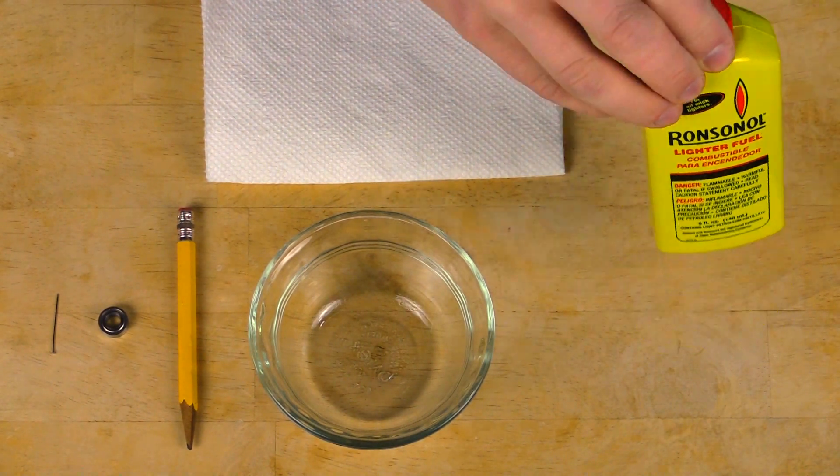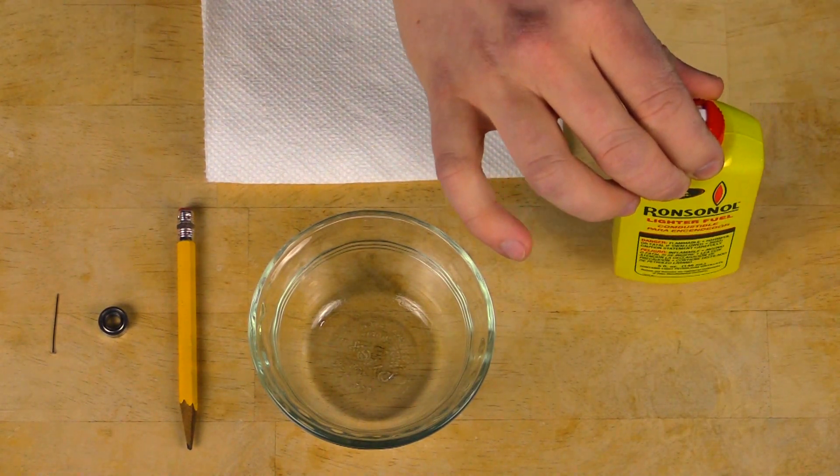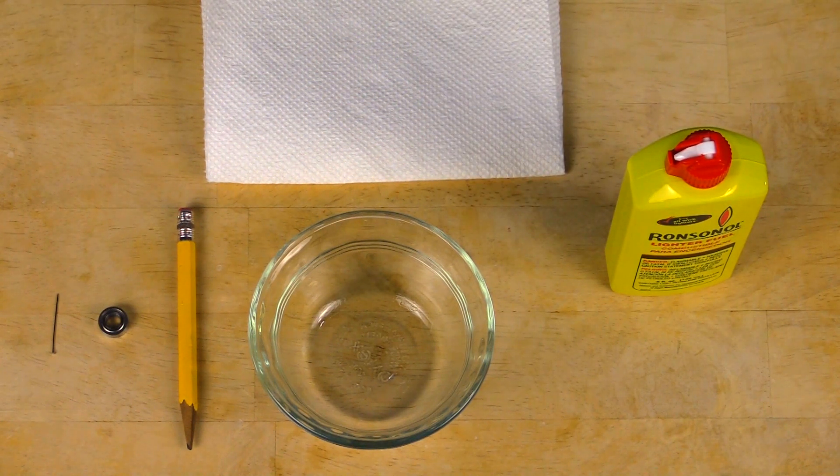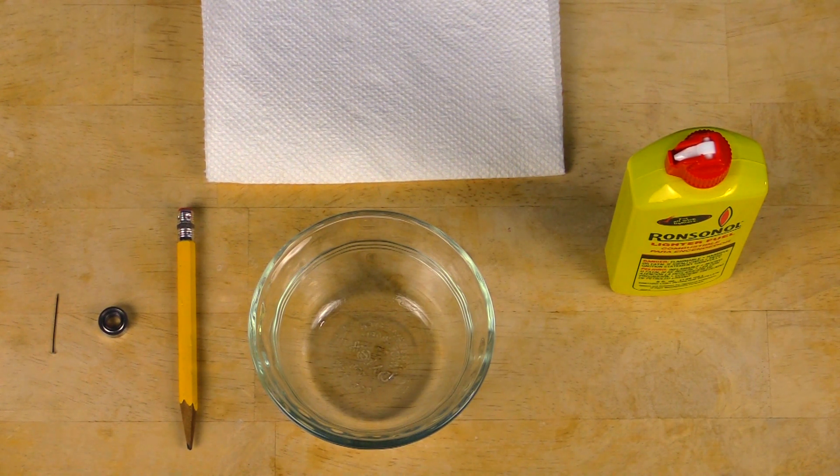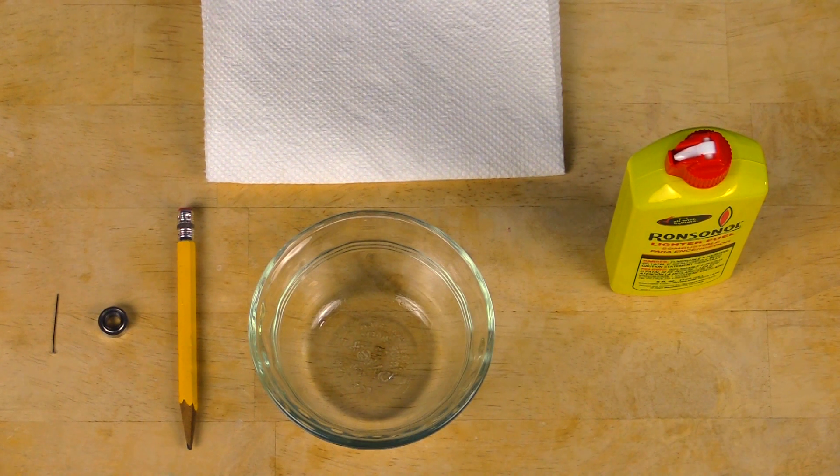In this video we're using lighter fluid because it's cheap, it's in a small container and it's not very harmful. Around your house you might have some chemicals like acetone or mineral spirits or paint thinner and these definitely work as solvents, but remember that they are harsh chemicals and you should only use them in a well ventilated environment.